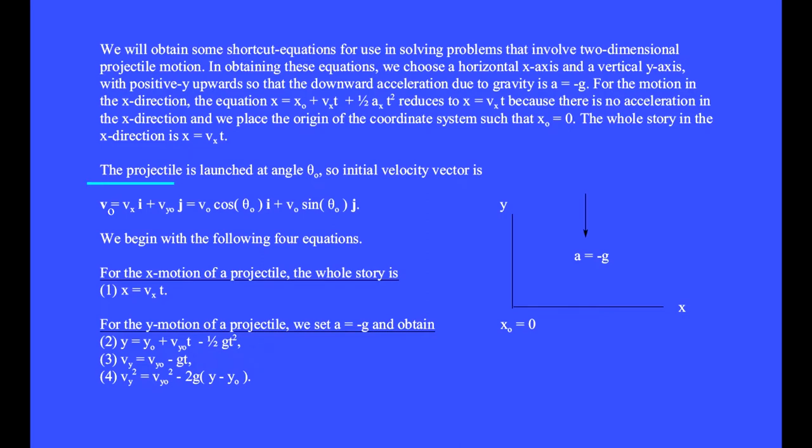The projectile is launched at angle θ₀, so initial velocity vector is v equals vₓ i-hat plus v_{y0} j-hat equals v₀ cosine θ₀ i-hat plus v₀ sine θ₀ j-hat. We begin with the following four equations, which we've been using already.